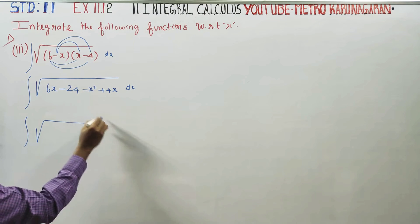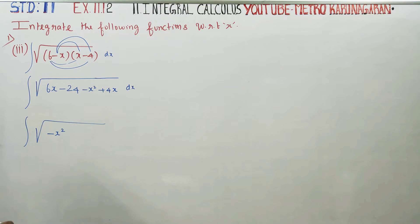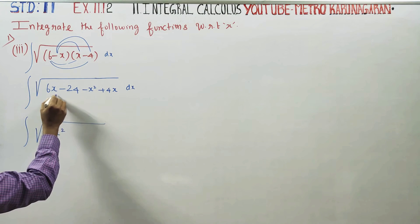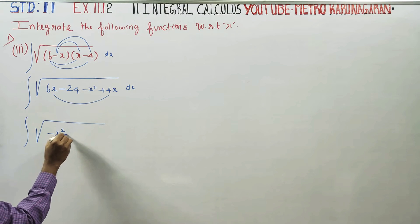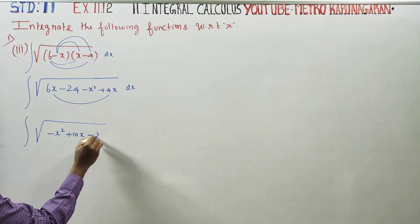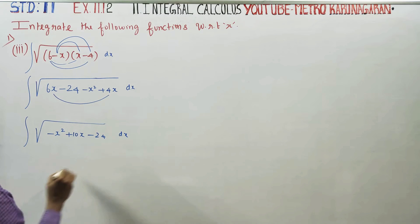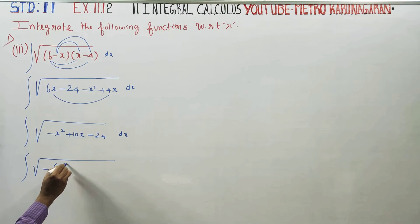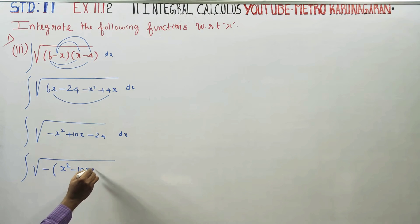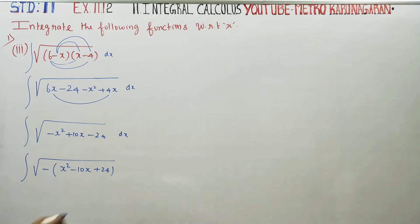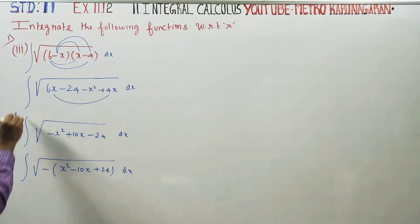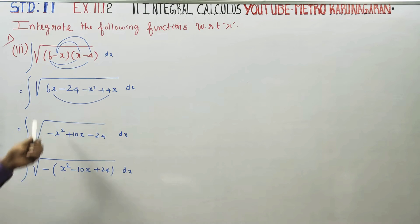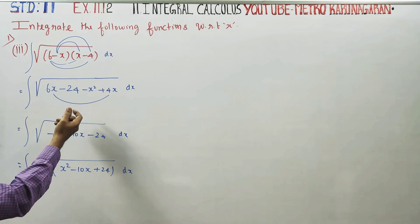Integration of minus x squared. First we have 6x and 4x, which add to 10x, minus 24 dx. So this becomes the idea of minus x squared plus 10x minus 24 dx.